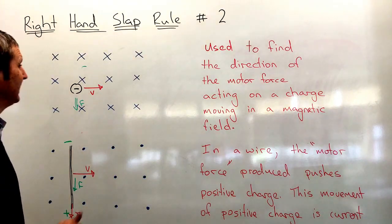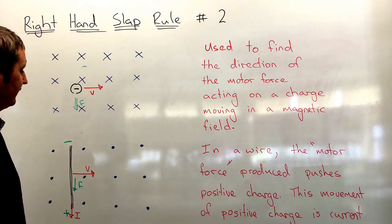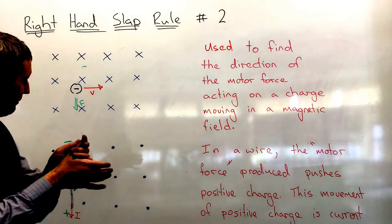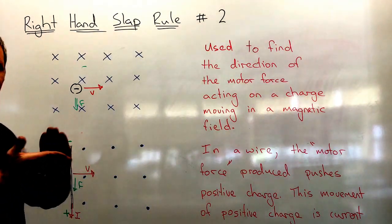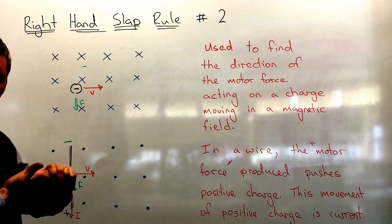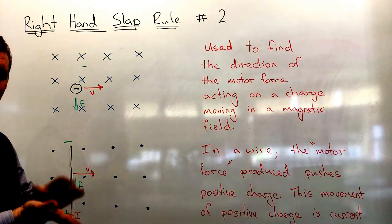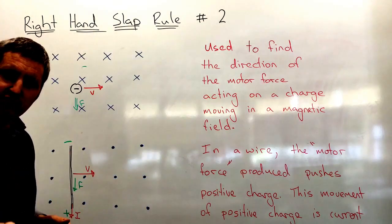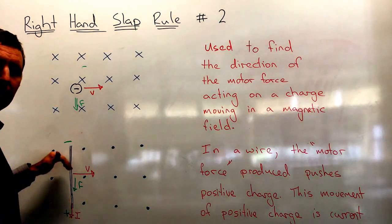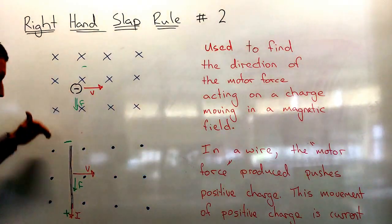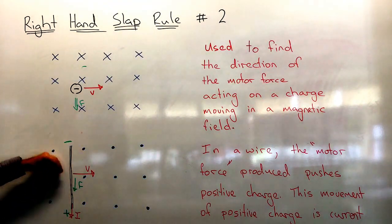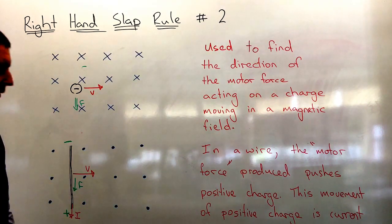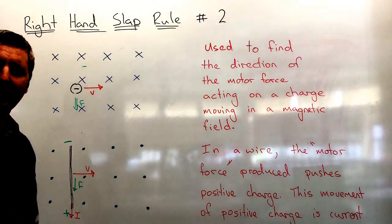To recap the right-hand slap rule: the thumb represents velocity, the fingers still represent the magnetic field lines, and the palm — the direction of the slap — represents the force. If it is a wire, the direction of the force is also the direction of the current traveling in the wire. Thank you for listening.